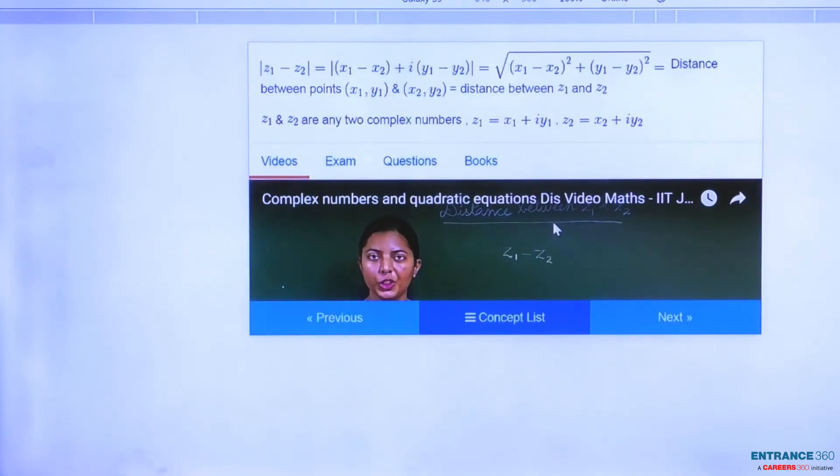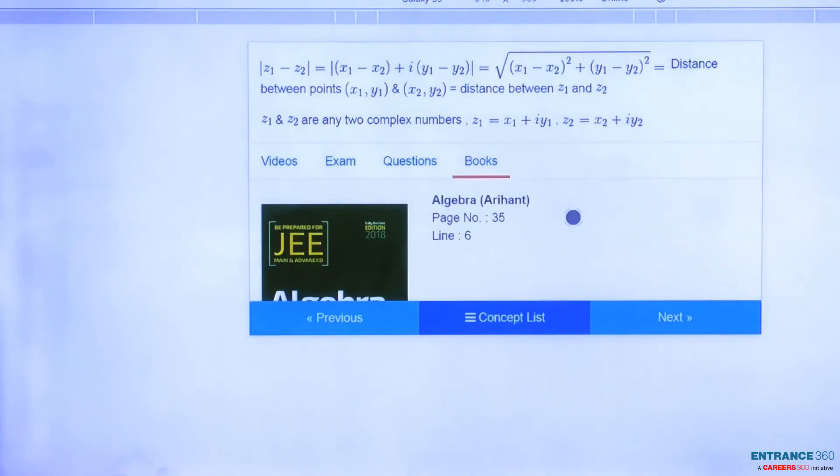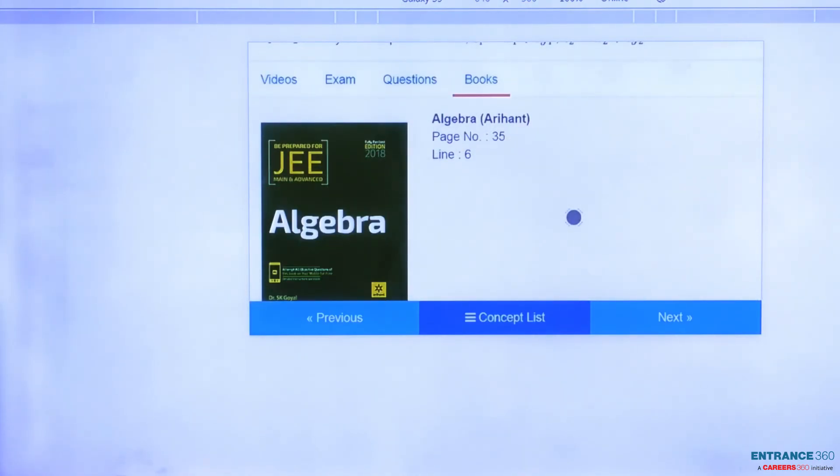To get more information about distance between z1 and z2, you can watch the video around 2 or 3 minutes length. Then you can also read the book of Arihant publication, Algebra, page number 35, line number 6. Thank you students.